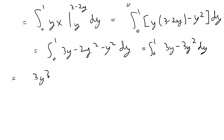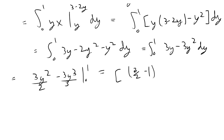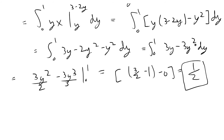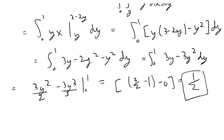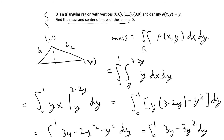The single integral gives 3y²/2 − 3y³/3 evaluated from 0 to 1, which is 3/2 − 1 − 0 = 1/2. So the mass of the triangular lamina is equal to 1/2. That solves the first part of the problem.